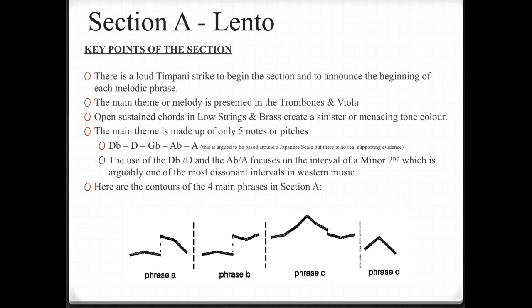The use of the Db and the D, and the Ab and the A, focus on the interval of a minor second, which is arguably one of the most dissonant intervals in Western music. The overall melodic section is divided into four phrases, and here are the contours, or the shapes, of the four phrases in section A. Before we start pulling apart section A, let's hear it in its entirety.